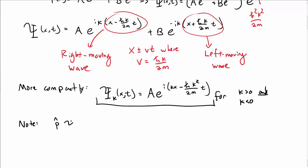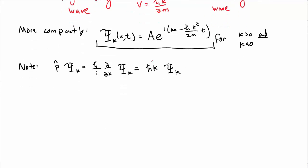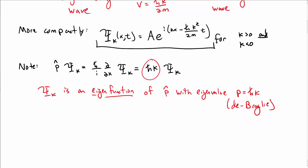Note if we take p-hat, the momentum operator, times our free particle wave function, so that's h-bar over i d by dx of psi k, we just get, after some algebra, we get h-bar k times the wave function back again. So that's kind of nice. That tells us that the wave function psi sub k is an eigenfunction of p-hat with an eigenvalue of p equal to h-bar k. And so that's a really nice relationship. We now know that this free particle has a definite momentum, h-bar k.